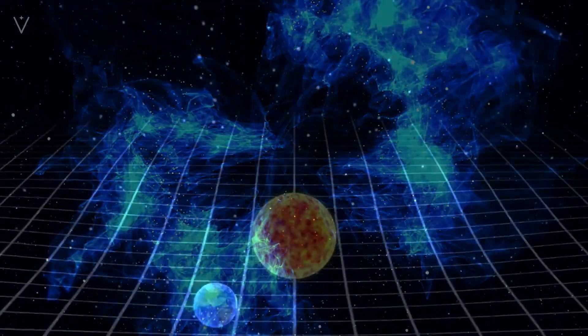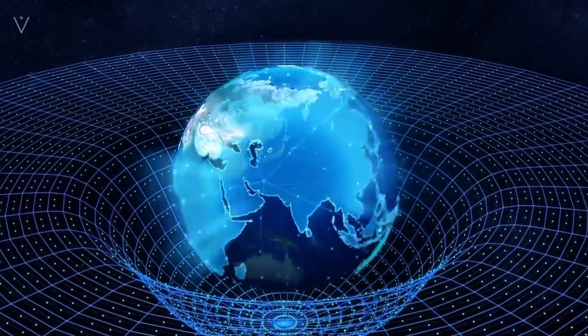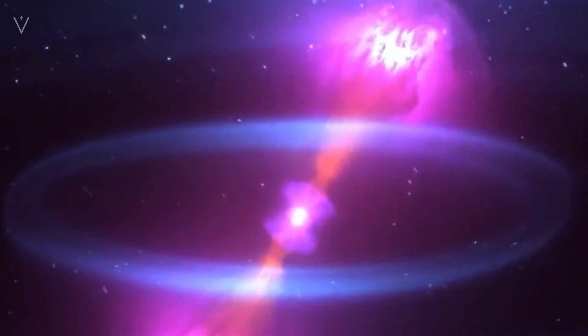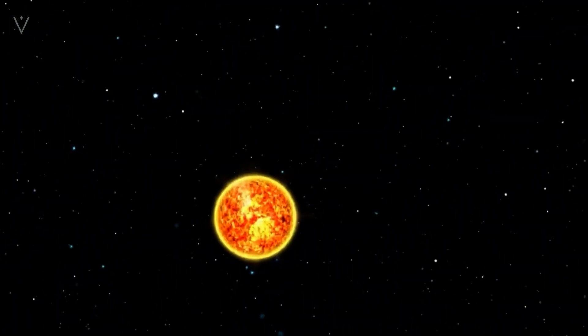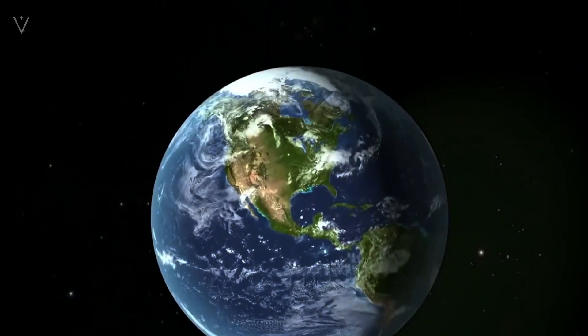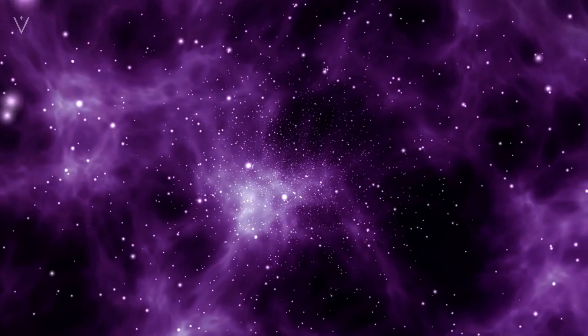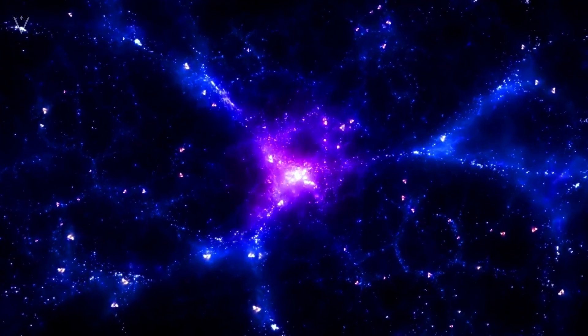We call this spherical space with a radius of about 46 billion light-years with the observer as the center the observable universe. Light outside the observable universe will never reach the Earth. If the universe continues to expand, all galaxies will eventually disappear. By then, the area around the Milky Way will become a dark space with nothing in it. Humans will be trapped in the Milky Way forever.